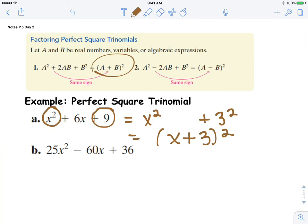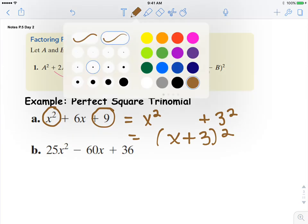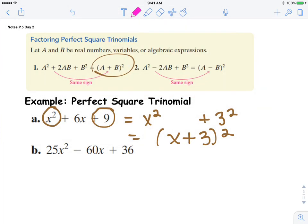The second example has a squared minus 2ab plus b squared. Notice that the sign is going to be the same. Here is our 25x squared as a perfect square. It's going to be 5x times 5x or 5x squared.